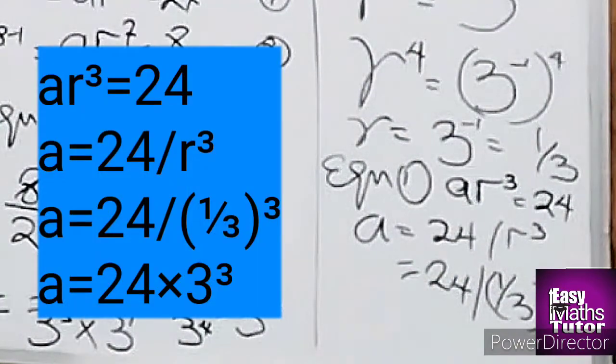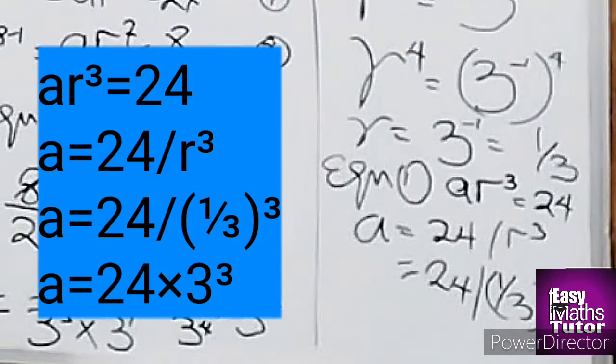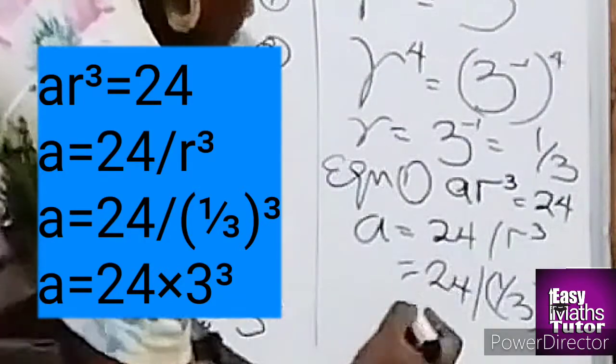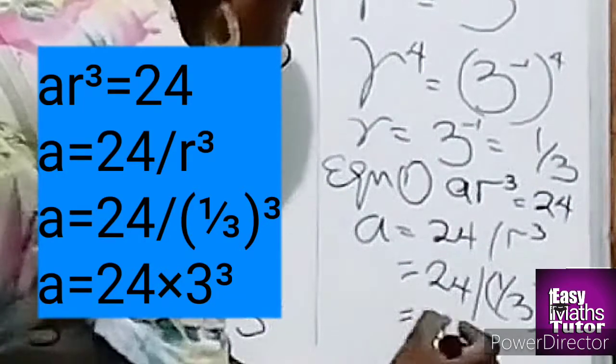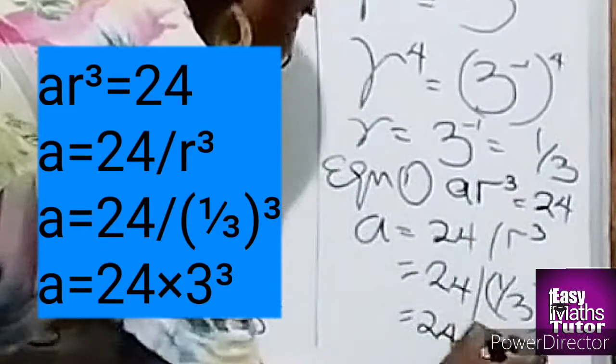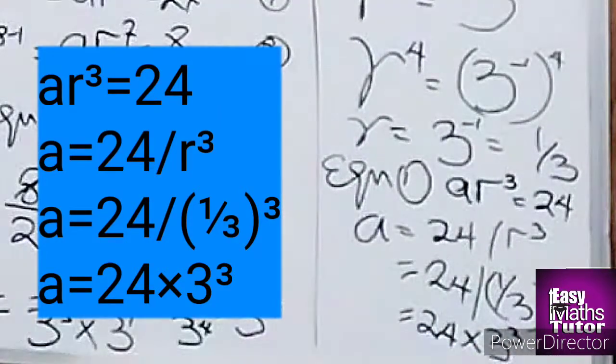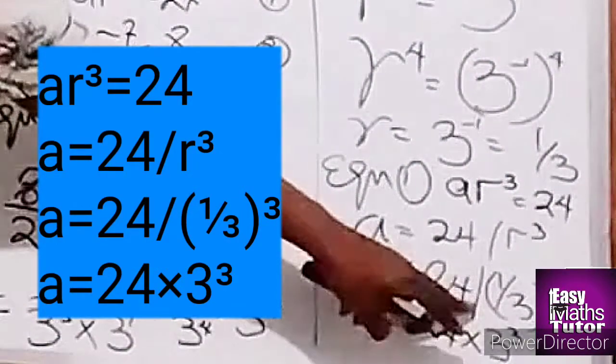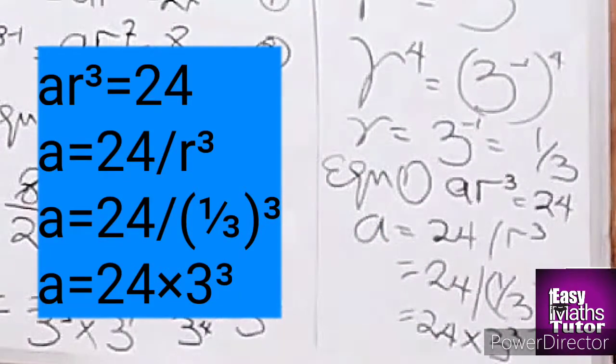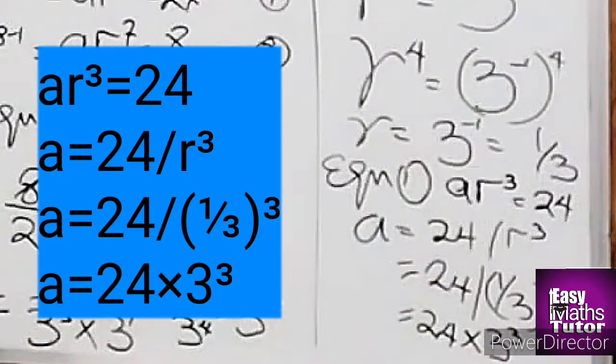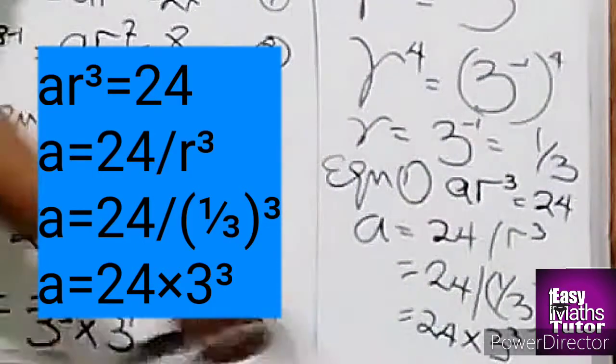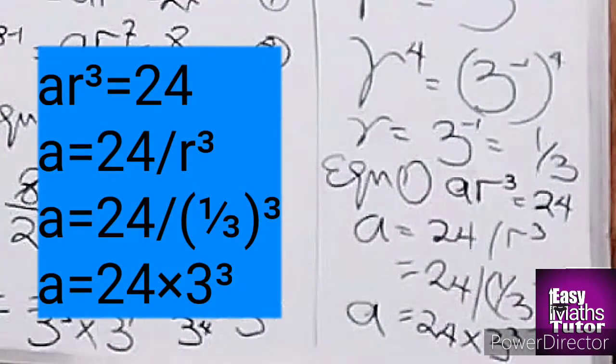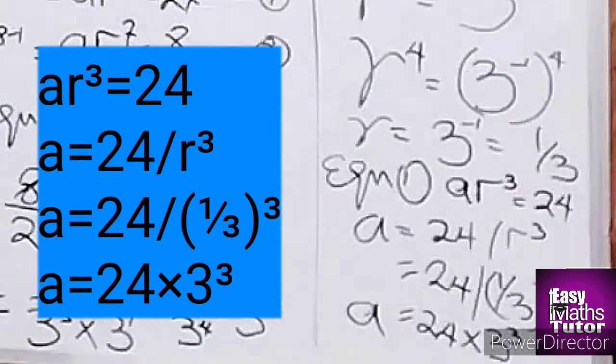So now we'll have 1 over 3. We're going to flip over the 1 over 3, so it will be 24 times 3³. And from there, we'll have our final answer. So if you multiply 24 times 3³, we'll have our value for a.